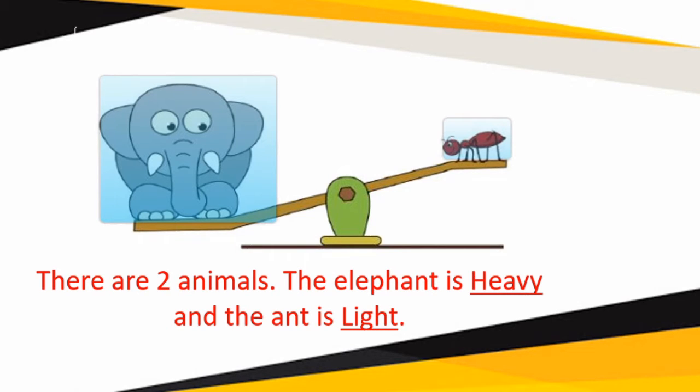There are two animals. When compared to ant, the physical weight of elephant is more. So, the elephant is heavy and the ant is light.